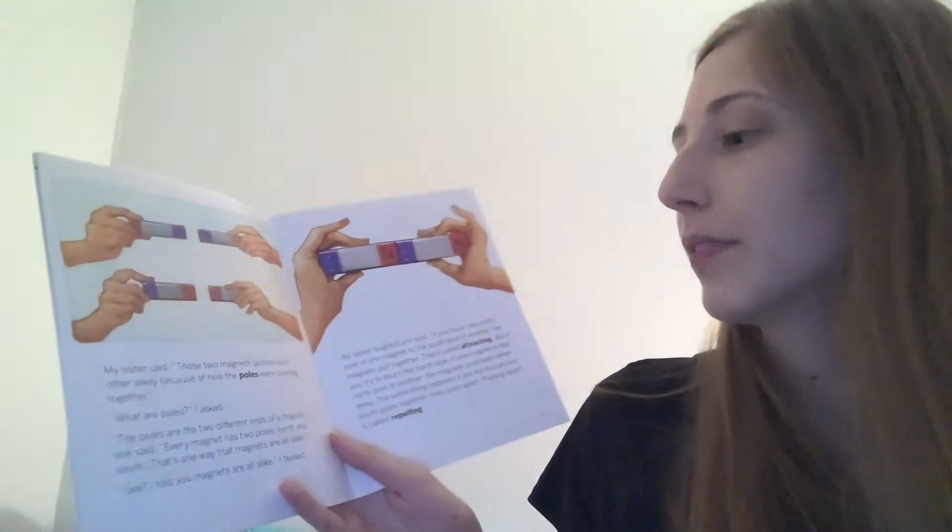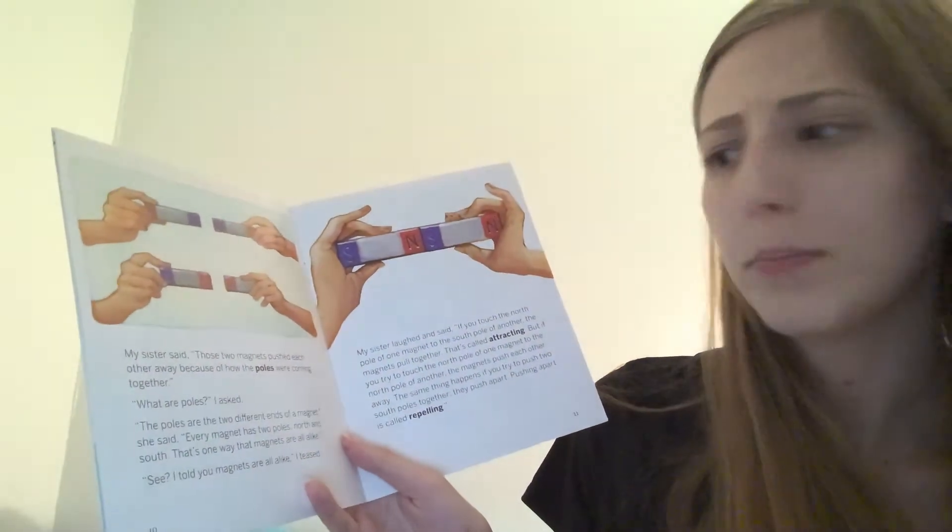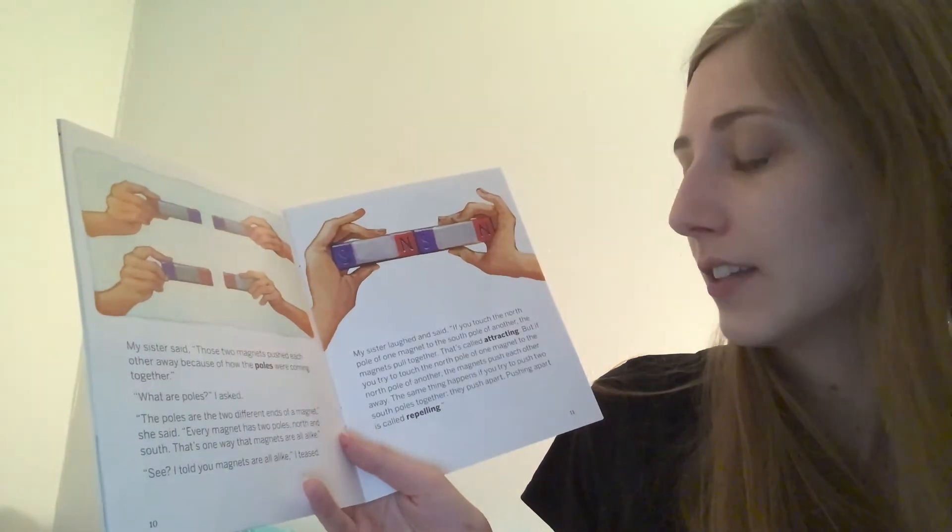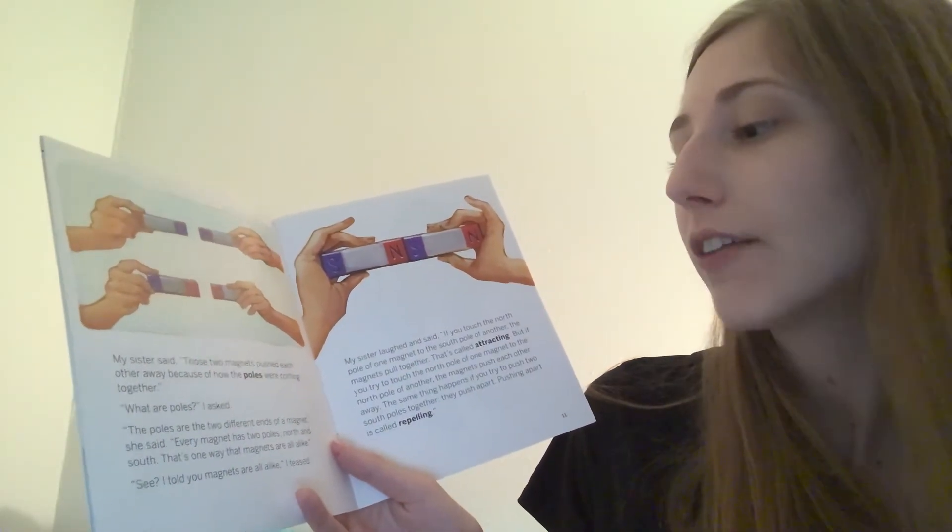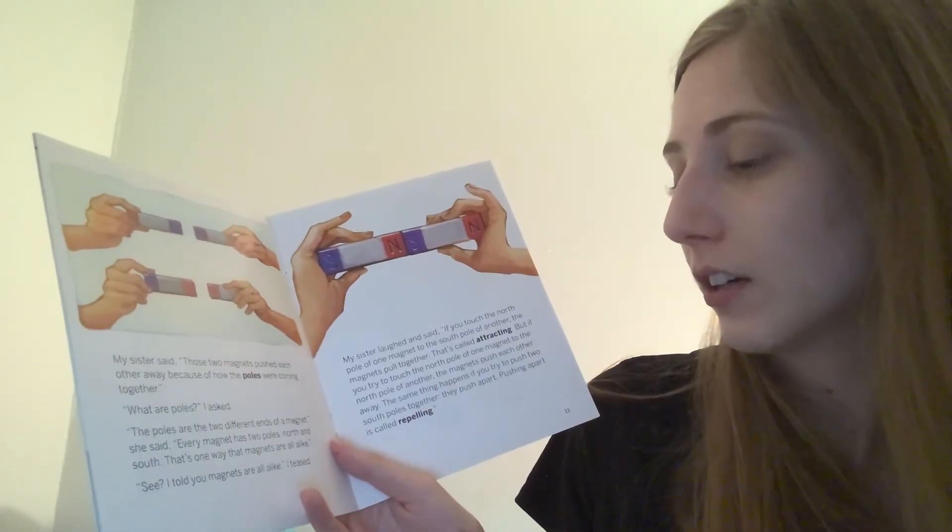My sister said, those two magnets pushed each other because of how the poles were coming together. What are poles, I asked. The poles are the two different ends of a magnet, she said. Every magnet has two poles, north and south. That's one way that magnets are alike.